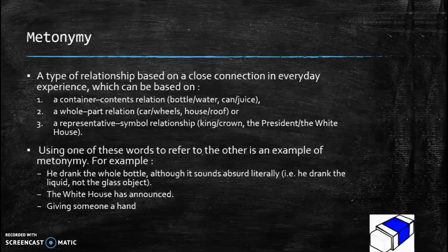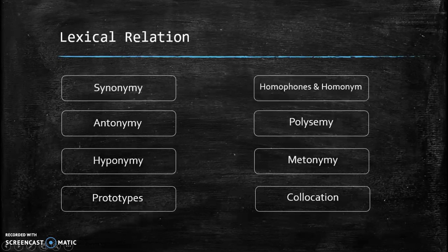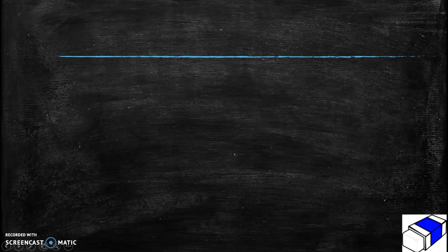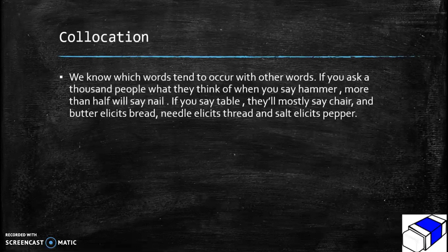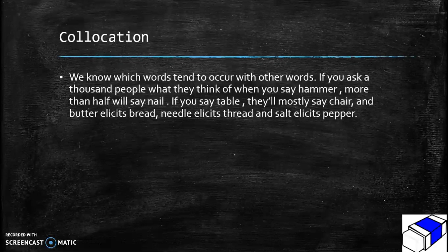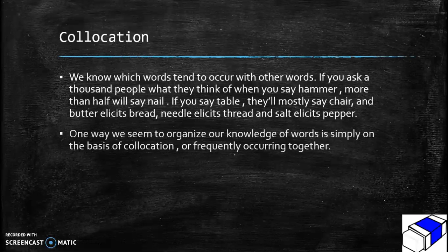The last subject is collocation. We know which words tend to occur with other words. If you ask a thousand people what they think of when you say 'hammer,' more than half will say 'nail.' If you say 'table' they will mostly say 'chair,' butter elicits bread, needle elicits thread, and salt elicits pepper. One way we seem to organize our knowledge of words is simply on the basis of collocation — or frequently occurring together.